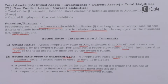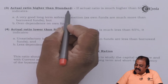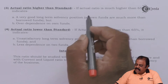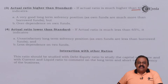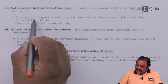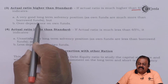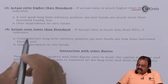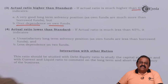There should be a proper balance between own funds and borrowed funds. If the actual proprietary ratio is much higher than 65 percent, it indicates a very good long-term solvency position as own funds are much more than borrowed funds, but over-dependence on own funds is indicated.